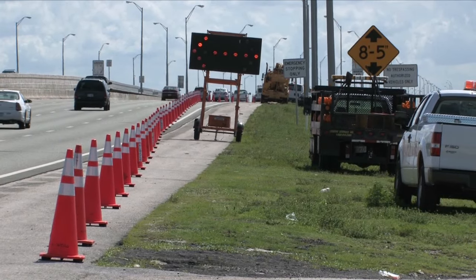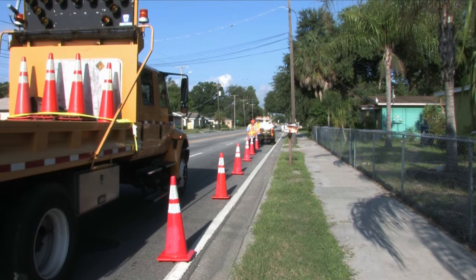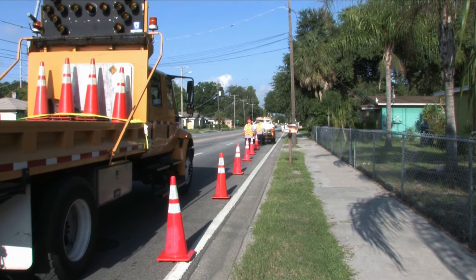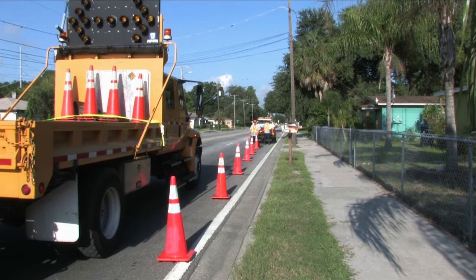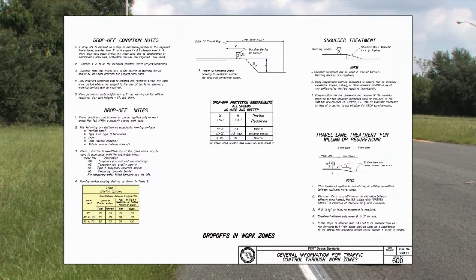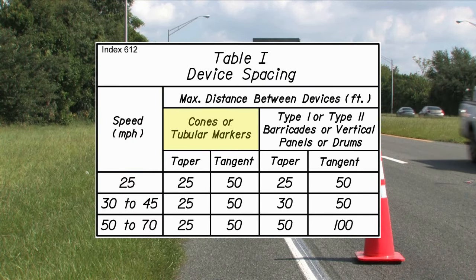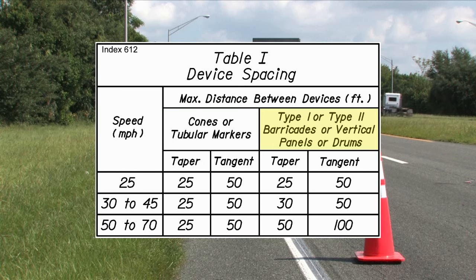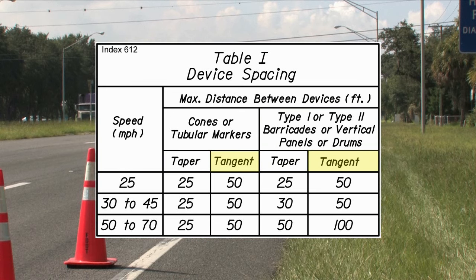A taper is a series of channelizing devices placed at an angle to move traffic out of its normal path. Tapers are located either upstream or downstream of the work space. The spacing for channelizing devices on tapers is based on several factors: the speed limit, the type of devices used such as cones, tubular markers, barricades, vertical panels or drums, and the location of the devices such as in the taper or the tangent.